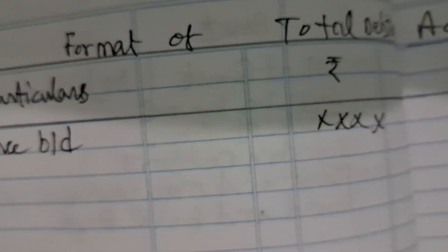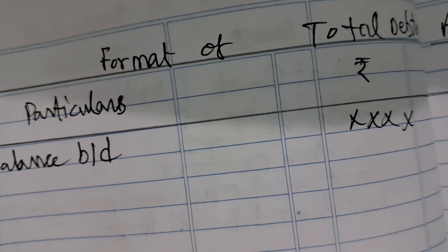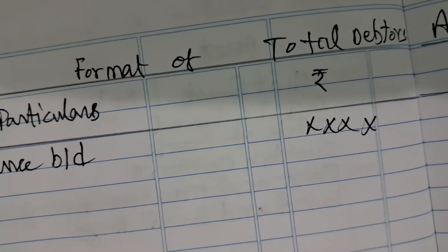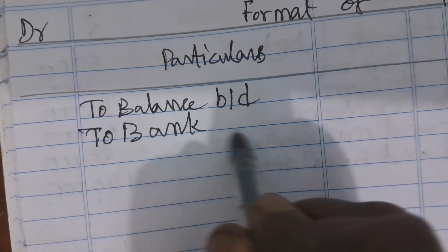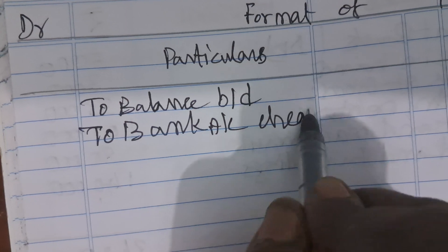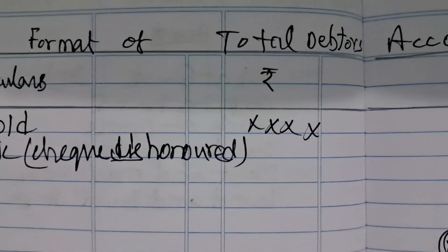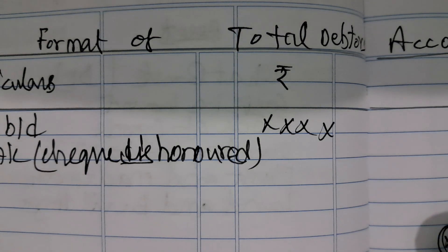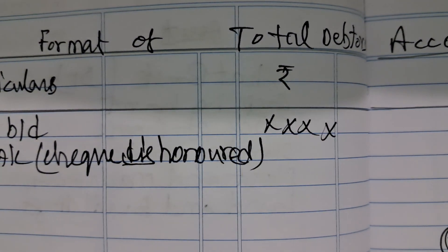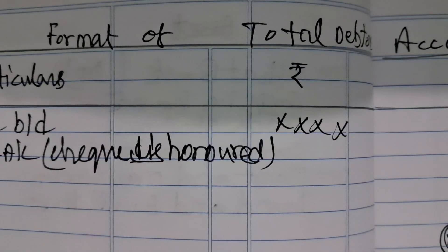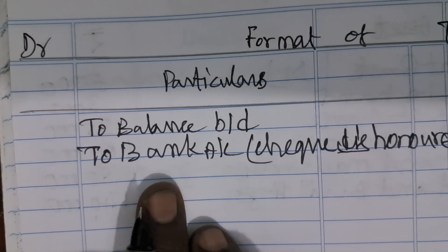By Bills Receivable — when received — this should be noted as an important item on the credit side. Similarly, on the debit side, if a cheque is dishonoured: Total Debtors Account debit to Bank Account. So the entry for cheque dishonoured is posted on the debit side as 'To Bank Account — cheque dishonoured'.